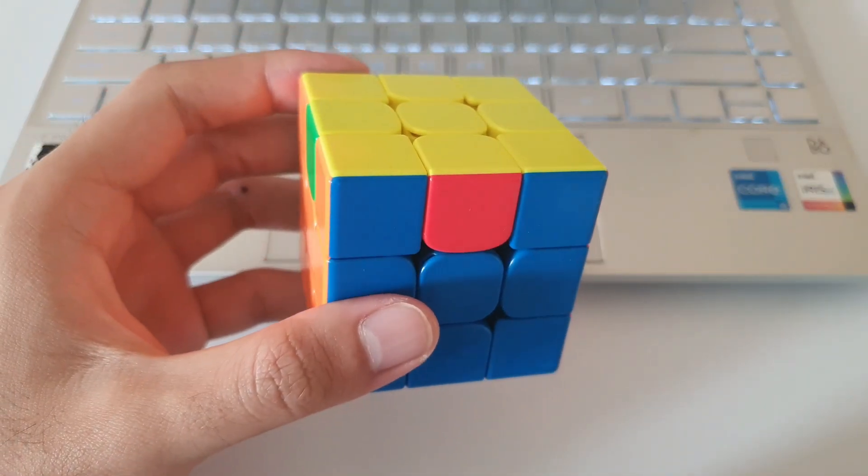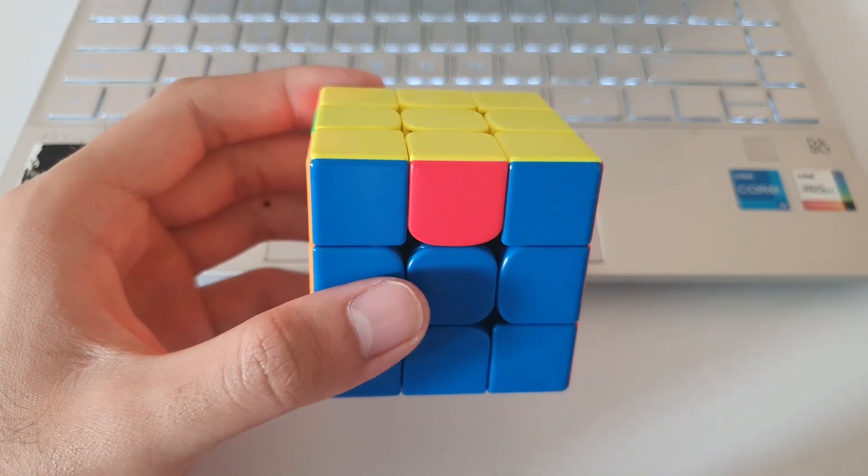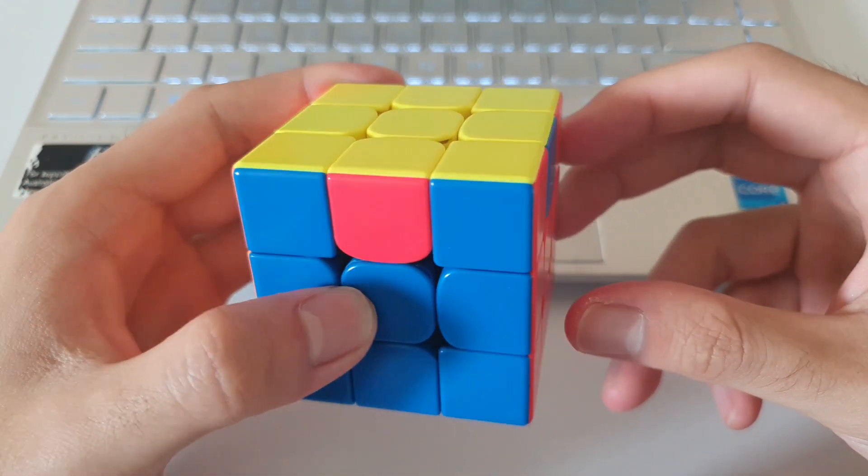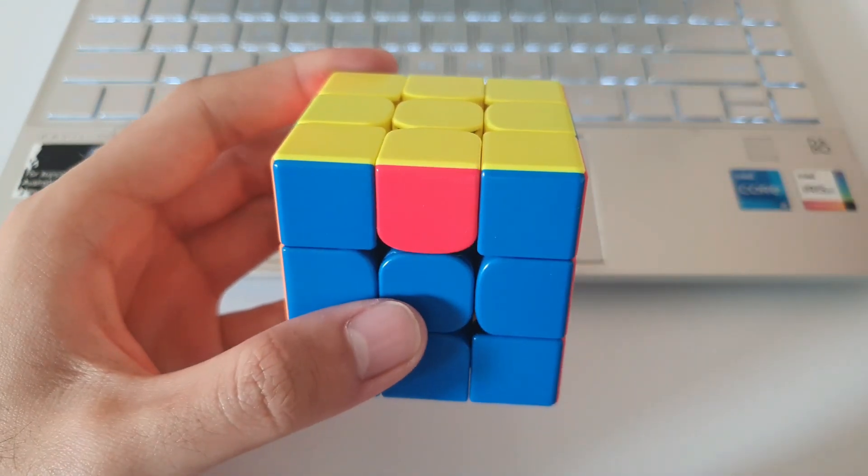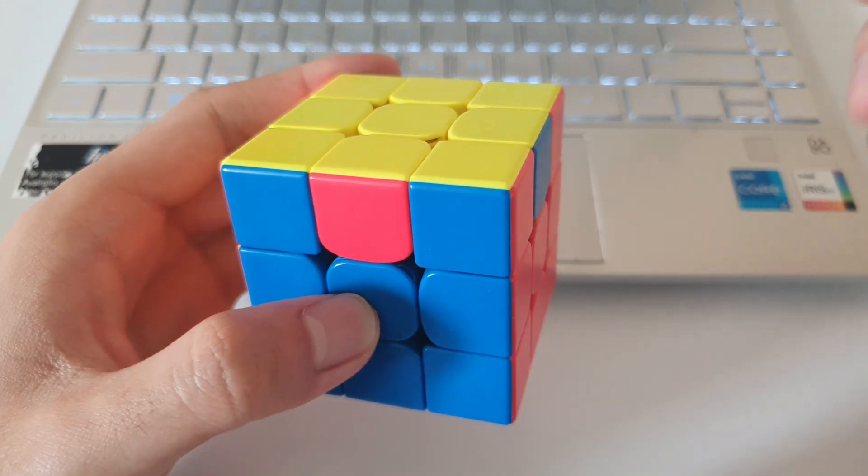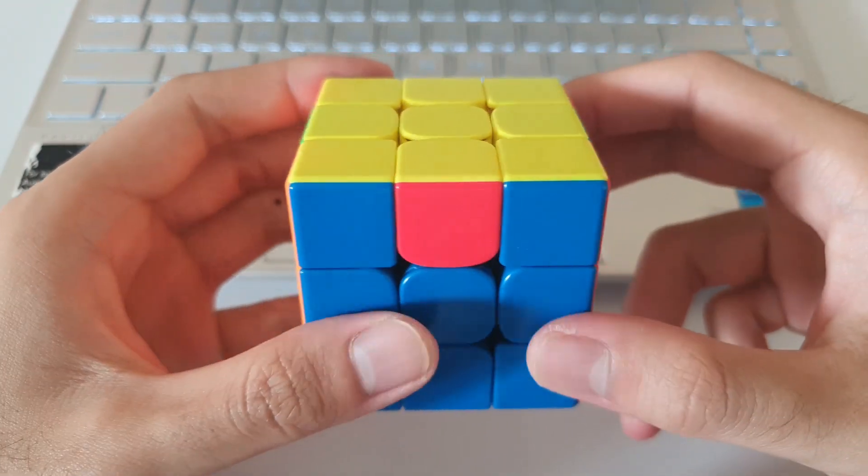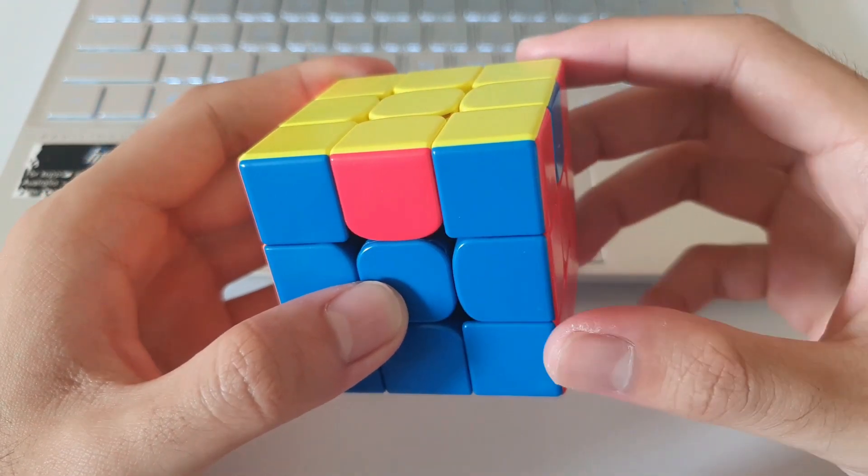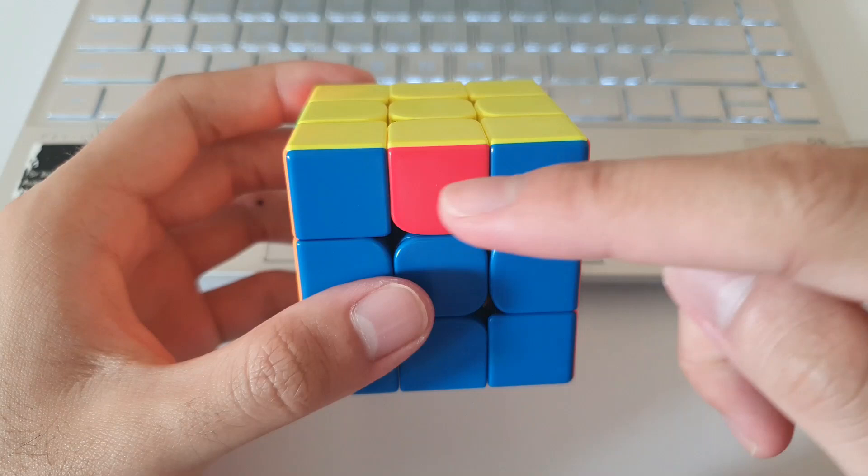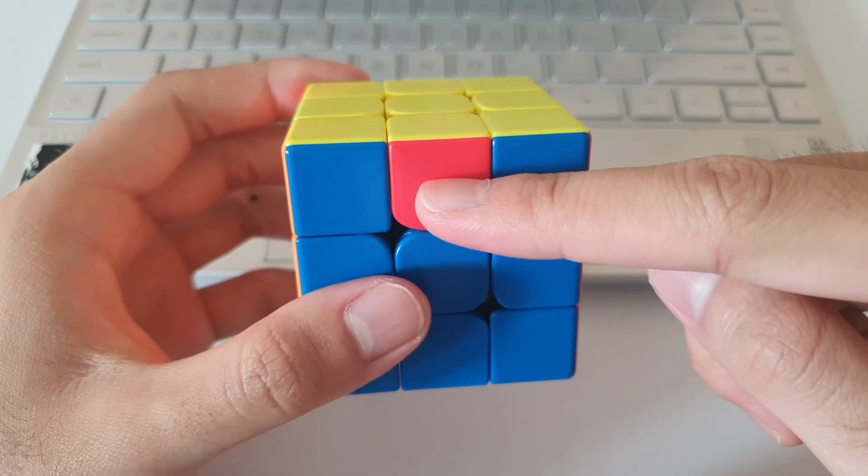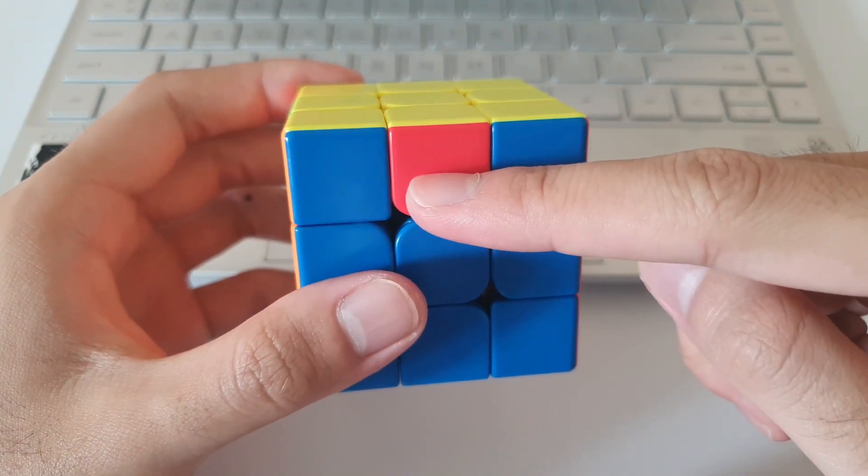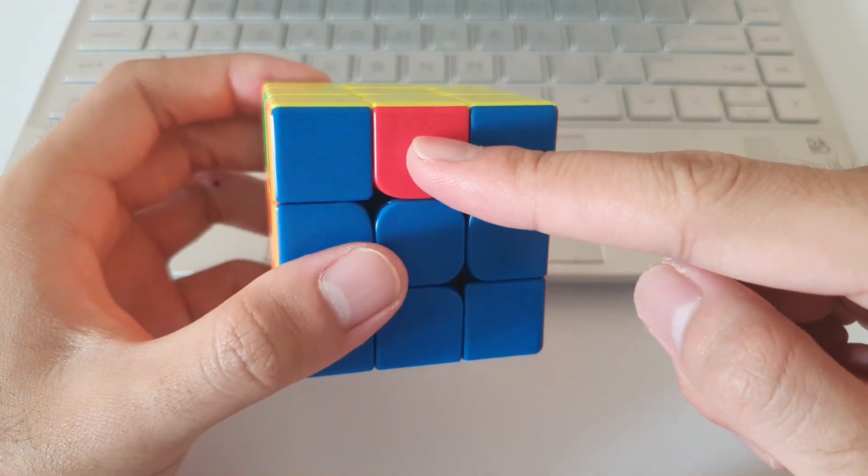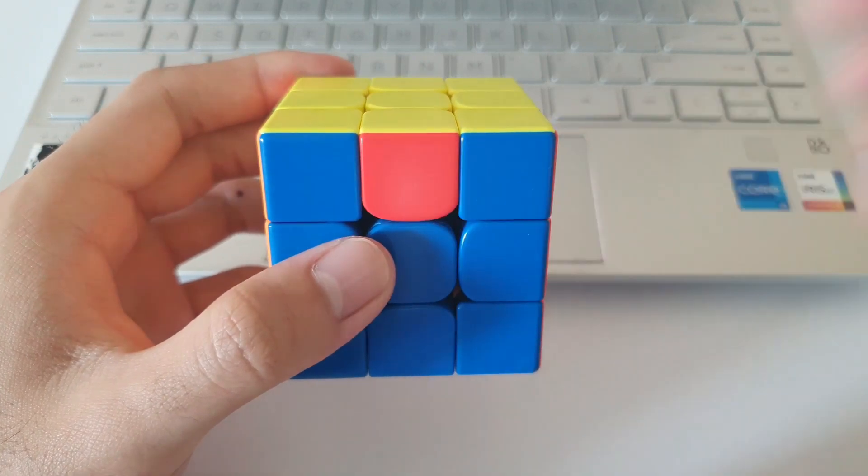The AUF for the Z perms are usually quite difficult to recognize because there's no really obvious color that stays still. And both algorithms also have just an AUF, even if you've already matched the headlights up. The way that I recognize AUF for this first one, which is the M prime algorithm, is that I look at the middle color and I'll just remember that the opposite color of this middle color will end up at the front. What I mean by that is we have a red edge here.